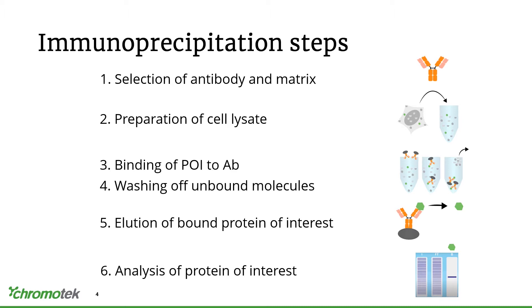In total, you can summarize an immunoprecipitation in six different steps. First, you need to select the right antibody and the right matrix. Then you have to prepare your cell lysate, bind your protein of interest to the antibody, and wash away unbound molecules. Then you may want to elute your protein of interest off the beads, and finally analyze it — for example, by SDS-PAGE and Western blotting, or by other techniques.